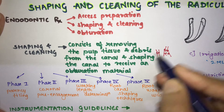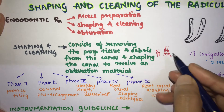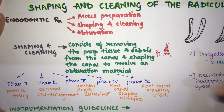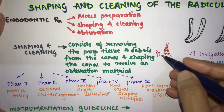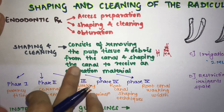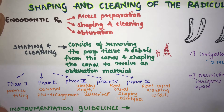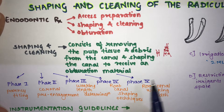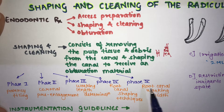In shaping, you are widening the canal so that when you're doing the obturation it is done well. Cleaning and shaping is divided into five phases: patency filing, coronal pre-enlargement, working length determination, root canal shaping techniques, and root canal working width.